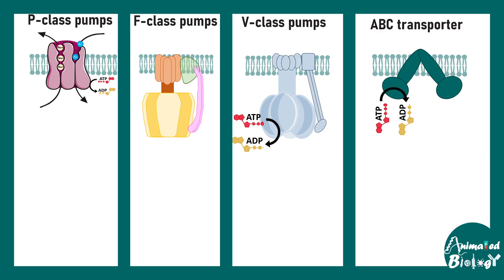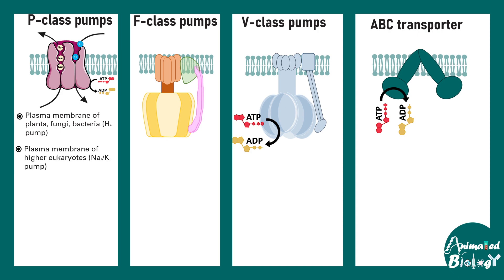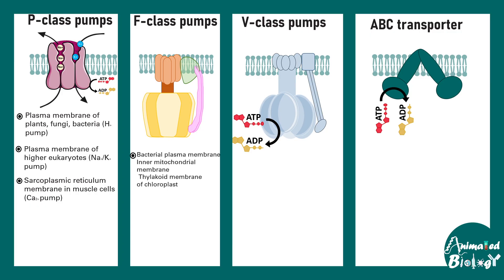Three of them are quite similar. P class pumps are found in the plasma membrane of plants, fungi, and bacteria. The plasma membrane of higher eukaryotes has a sodium-potassium ion exchange pump in almost every cell, and the sarcoplasmic reticulum has a calcium pump. F class pumps are very common in bacterial plasma membranes and the inner membrane of mitochondria, and are also present in the thylakoid membrane of the chloroplast.